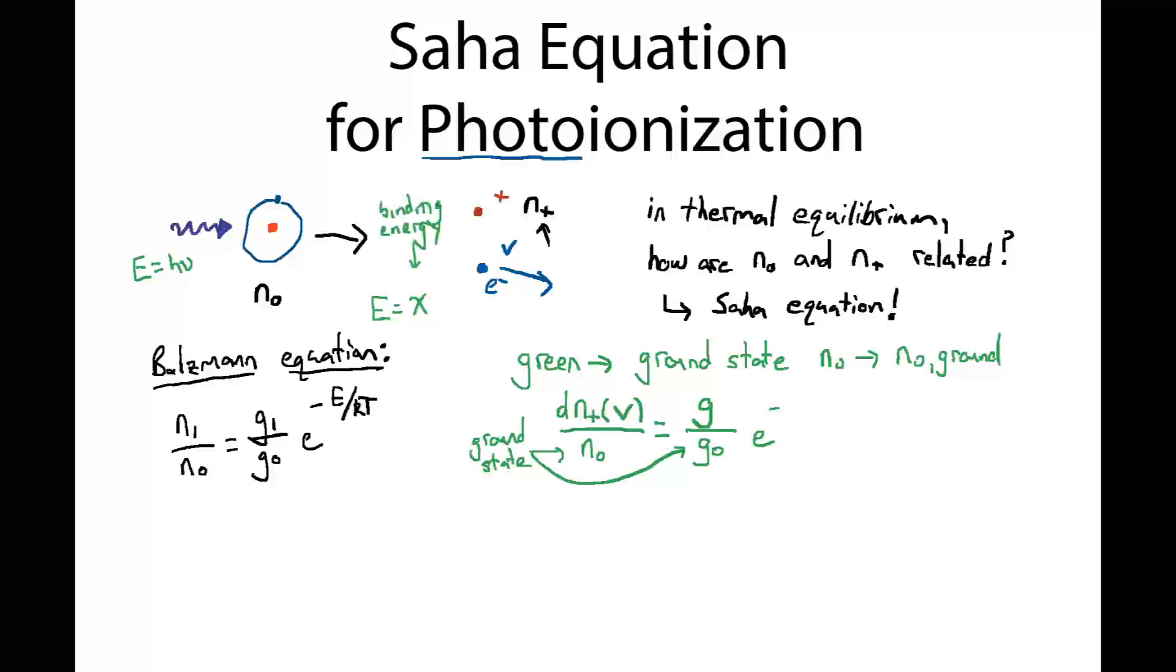And the other portion of that energy is in the kinetic energy of this electron, which was one-half Me v squared. So when I write energy here, the energy here was chi, the ionization potential, along with the kinetic energy of that electron, all over kT.